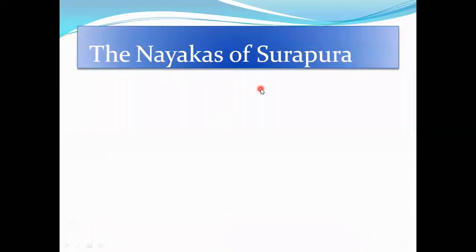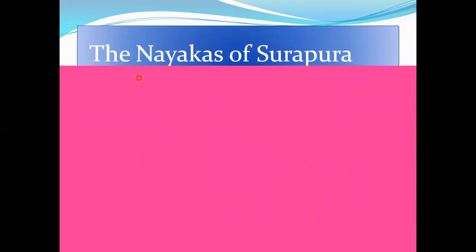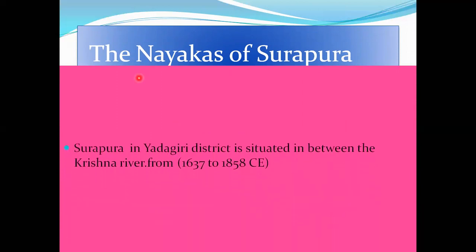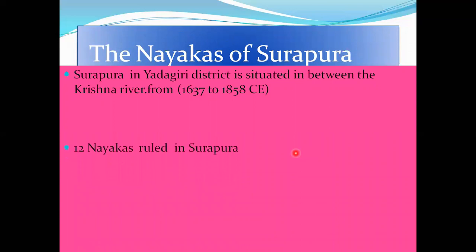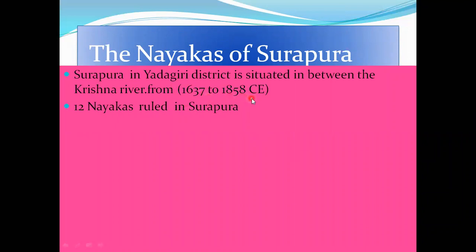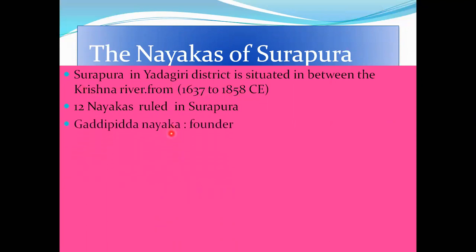Now we move to the Nayakas of Surapura. Surapura is in Yadgiri district, situated on the banks of the Krishna and Bhima rivers. They ruled from 1637 to 1858 CE. Several Nayakas ruled in Surapura. The founder of the Nayakas of Surapura was Gaddi Piddha Nayaka, whose ancestors served in the Vijayanagara army.